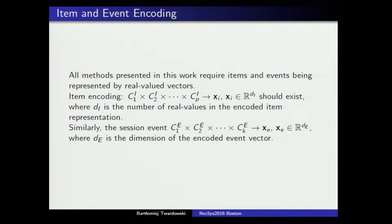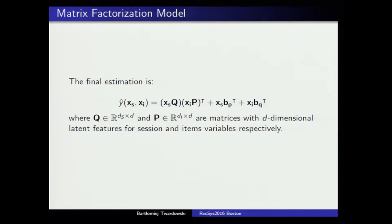Before going further in calculation, we have to vectorize the item and event into real-valued vectors. I do the same thing for both items and events using simple methods: for categorical values I do one-hot encoding, for textual values I treat them as a bag of words, and numerical values are normalized. The first method is matrix factorization, where the final estimation can be modeled as an interaction between the session vector and the item vector, where each feature is described by a dimensional latent feature vector. This model is a simplified version of factorization machines.